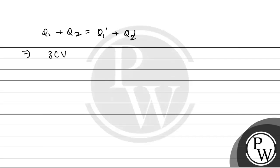We will have 3CV, that is Q1 plus Q2, equals CVc into (2 plus K). From here, we have Vc is equal to 3V divided by (K plus 2).